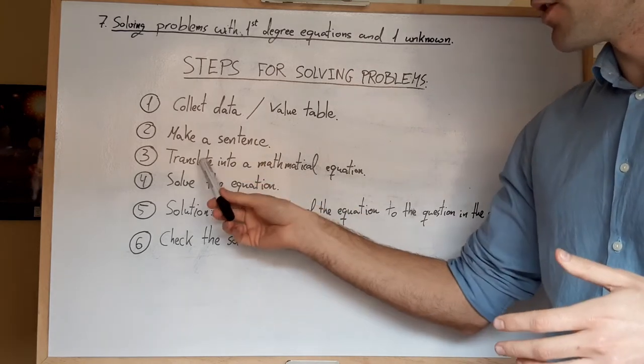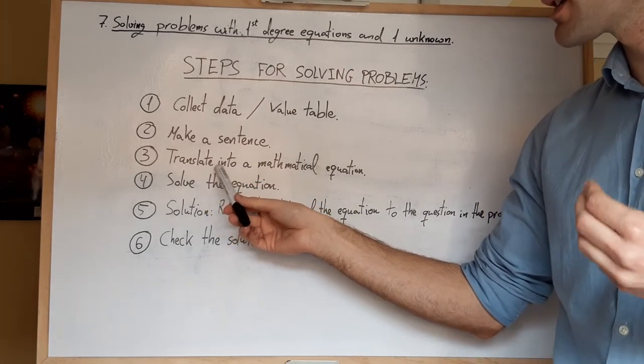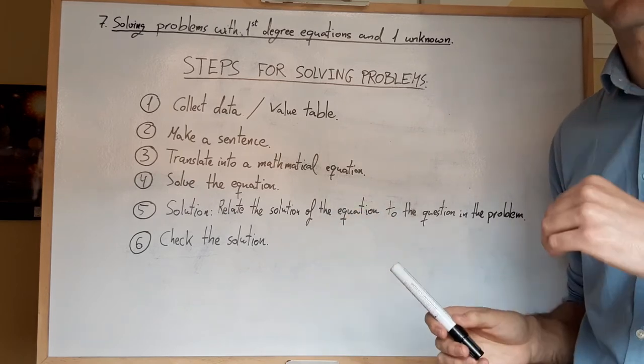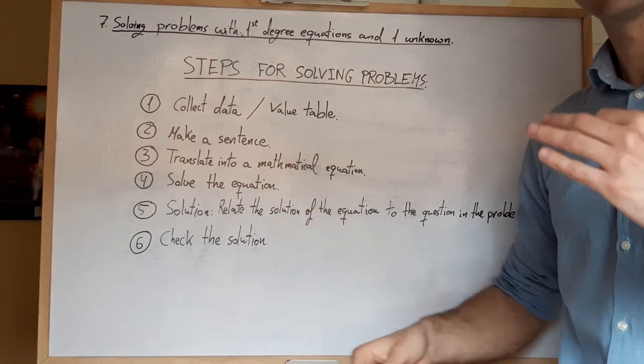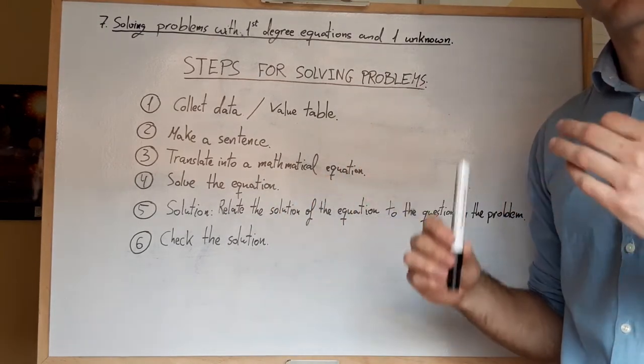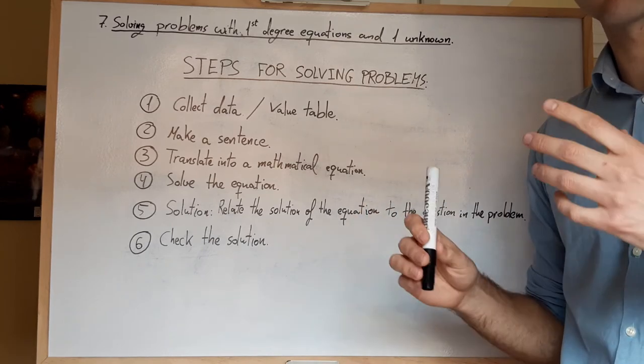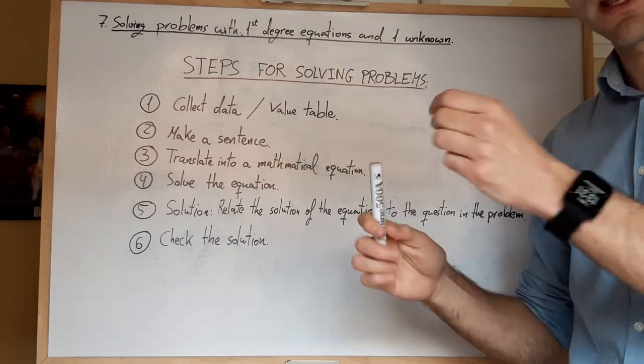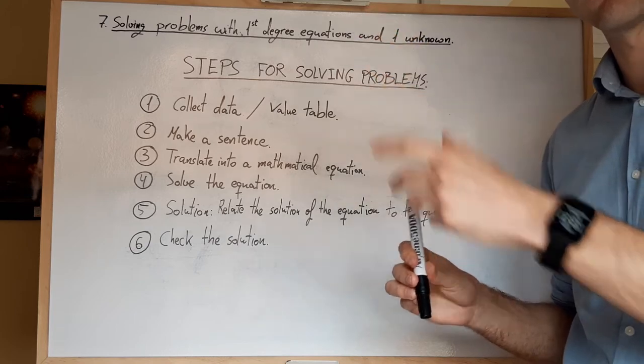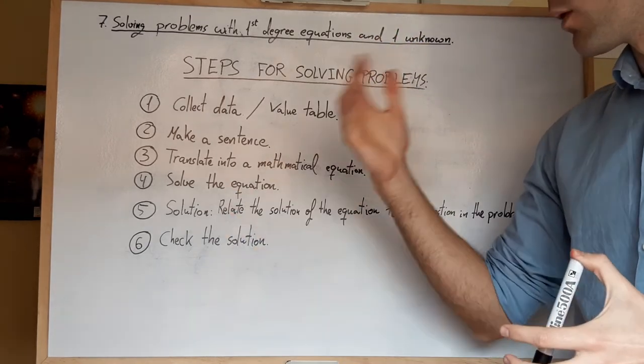After that, in the third step, we are going to translate that sentence into a mathematical equation. En el tercer paso, traducimos lo que hemos escrito, esa frase, esa oración que hemos escrito con lenguaje normal escrito, a una ecuación matemática.